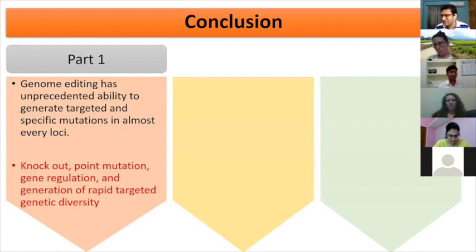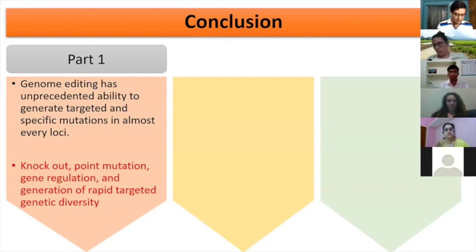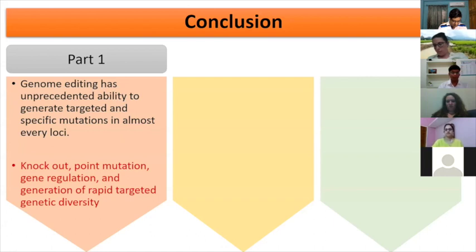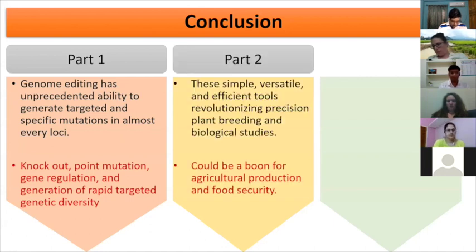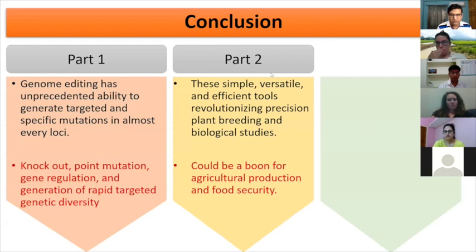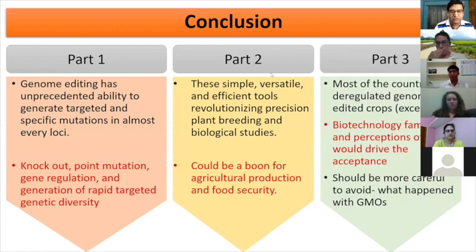In conclusion, genome editing has an unprecedented ability to generate targeted and specific mutations in almost every locus, enabling knockouts and point mutations like A-to-G or C-to-T, and allowing rapid development of targeted genetic diversity. These simple, versatile, and efficient tools are revolutionizing precision plant breeding and biological studies, rapidly accelerating crop improvement. It could be a boon for agricultural production and food security, as shown by examples in cassava, rice, and wheat. Regarding regulation, most countries have deregulated genome-edited crops, except the European Union.